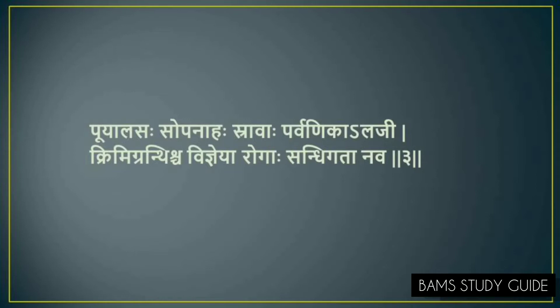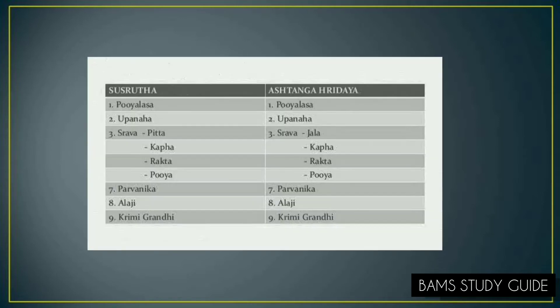In Sushruta Samhita, the definitions of these Sandhigata Rogas are explained in Uttara Tantra, Sandhigata Roga Vijnana Adhyaya. According to Sushruta, those nine are: Pooya Alasa, Uppanaha, four types of Netra Strava — that is Pitta, Kapha, Rakta and Pooya Strava — then Parvani, Alaji, and Krimigrandhi.